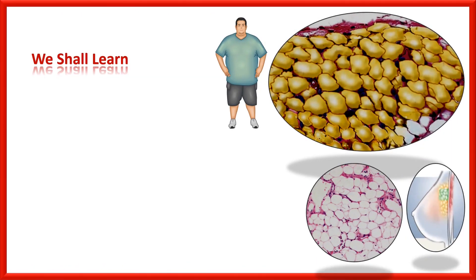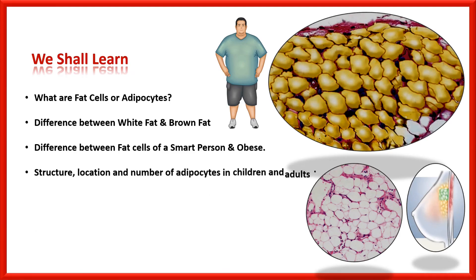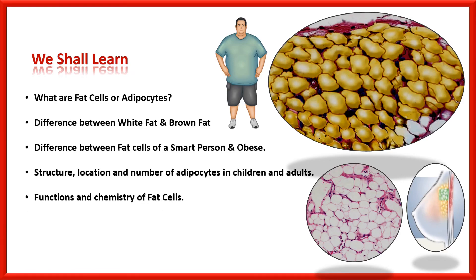In this short but informative video, we shall learn what are fat cells or adipocytes, the difference between white fat and brown fat, the difference between fat cells of a slim person and an obese person, structure, location, and number of adipocytes in children and adults, functions and chemistry of fat cells, and why women have more fat than men, and many more.